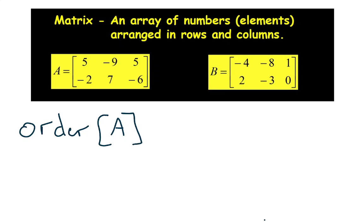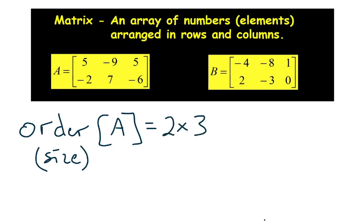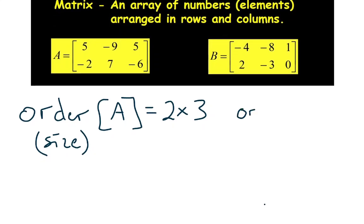When we refer to the order of matrix A, we sometimes put brackets around the A just to make clear we're talking about the matrix. The order is the same as the size, and the size is always given as rows then columns. How many rows in matrix A? Two rows. How many columns? Three columns. So we have a two by three — two rows, three columns.